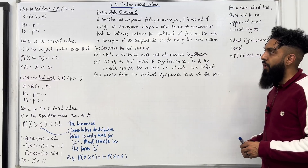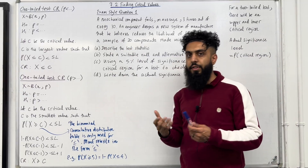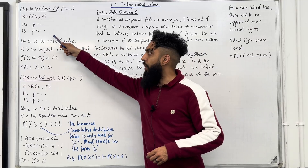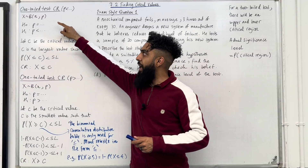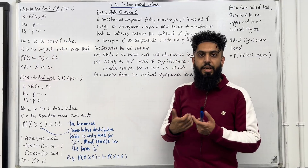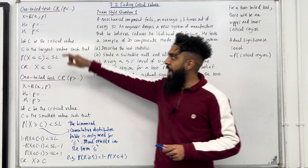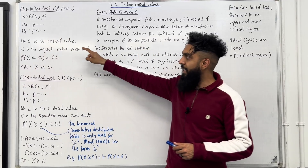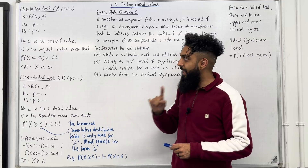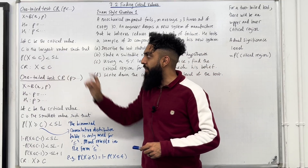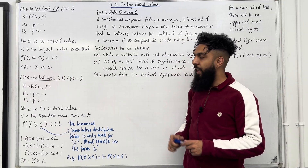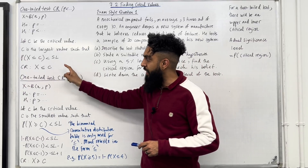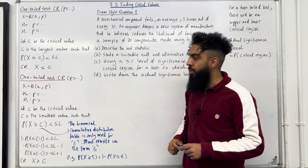I'm going to start off with the one-tail test critical region — CR is shorthand for critical region. We're looking at where P is less than in H1. So X is modelled as a binomial distribution with fixed number of trials N and fixed probability P. In H0, P is equal to a value; in H1, P is less than. Let C be the critical value. C is the largest value such that P(X ≤ C) is less than the significance level. Therefore, the critical region is given by X ≤ C.